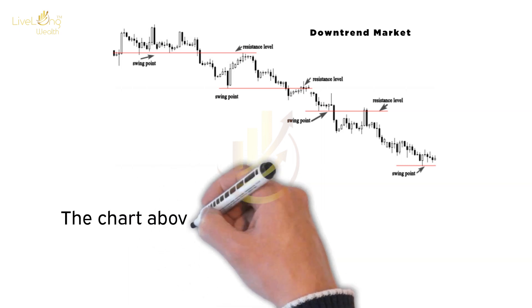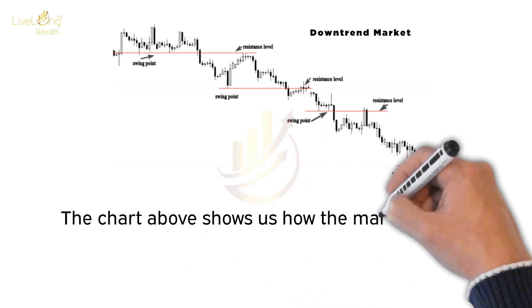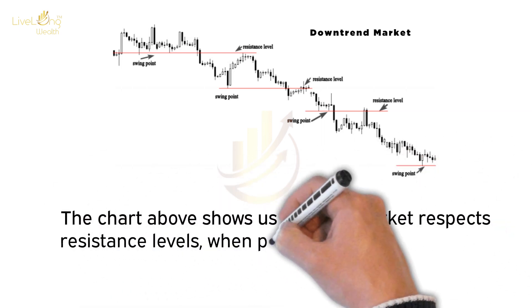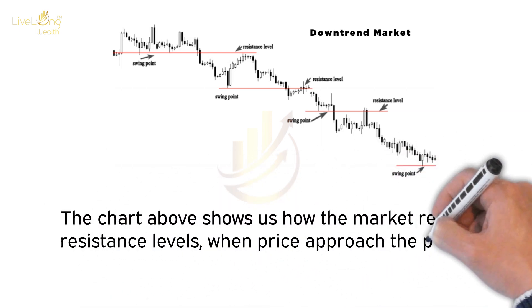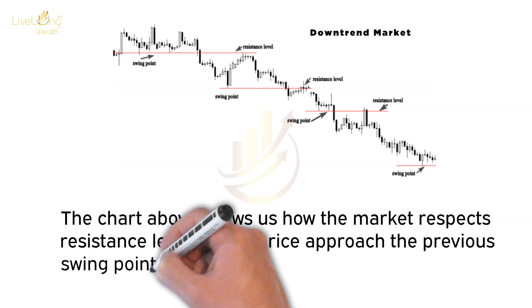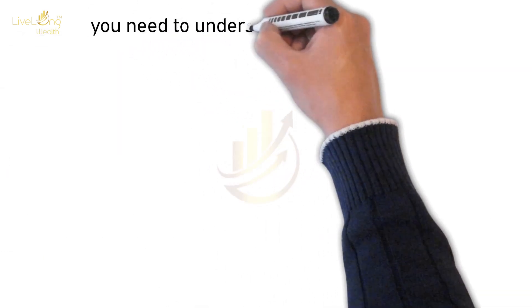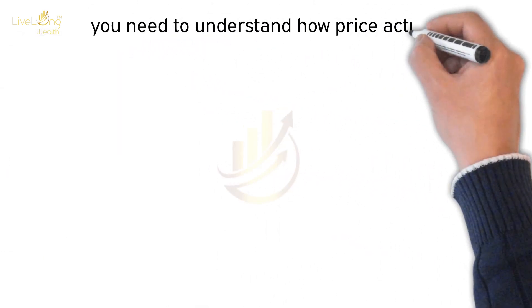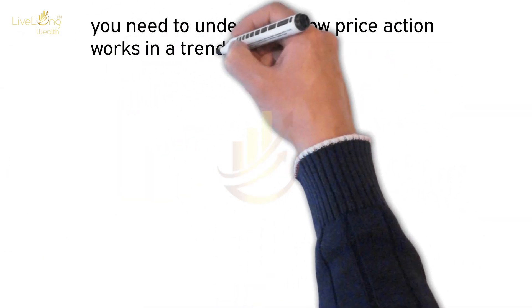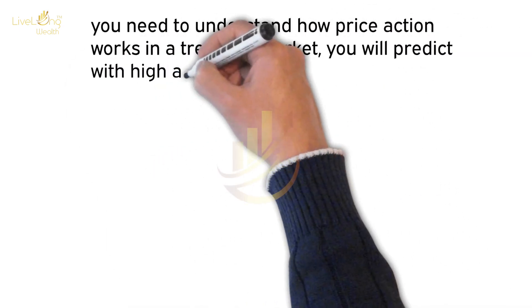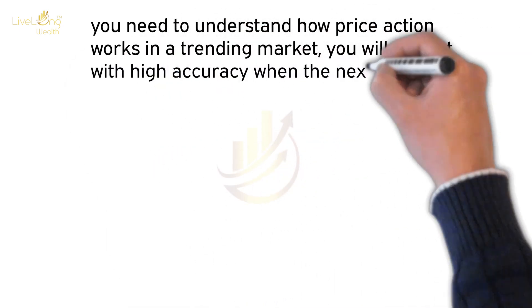The chart above shows how the market respects resistance levels when price approaches the previous swing point resistance level. You need to understand how price action works in a trending market, and you will predict with high accuracy when the next impulsive move will begin.